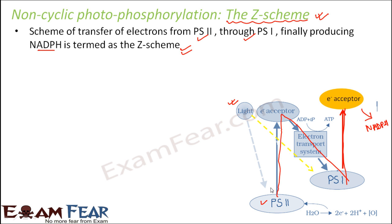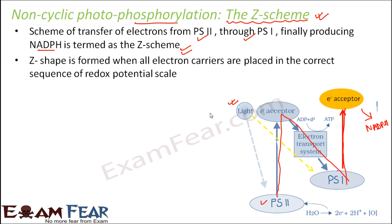This process happens only in the presence of light, because without light the electrons will not get excited. Phosphorylation means adding phosphate; by this process ATP is synthesized because phosphate is added to ADP to produce ATP — hence it is called non-cyclic photophosphorylation. The Z-shape is formed when all electron carriers are placed in the correct sequence on the redox potential scale, with higher potential at the top and lower potential at the bottom. Only then will the electron move down the potential scale and produce this shape.